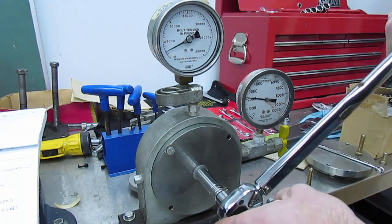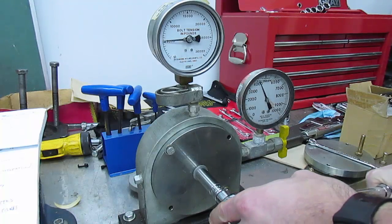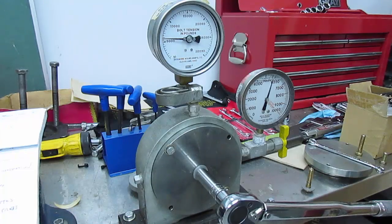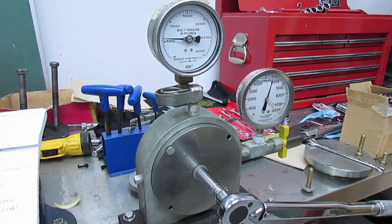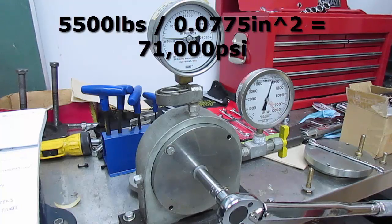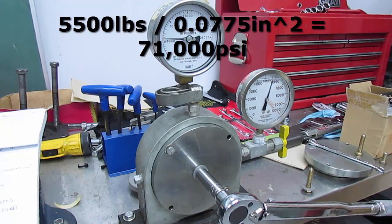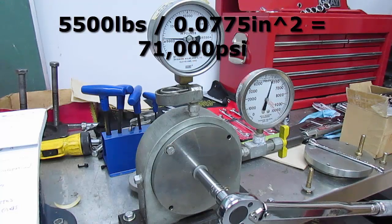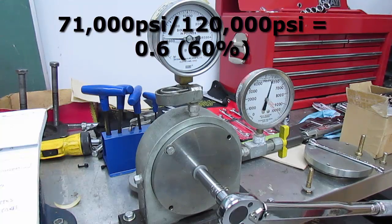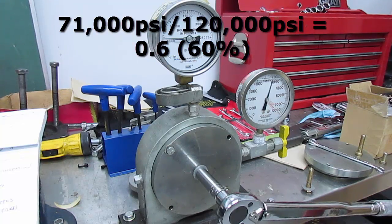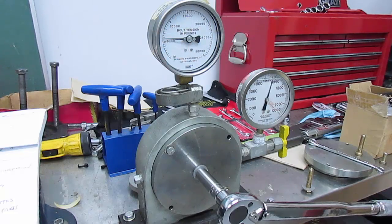As you can see, the bolt tension is increasing and there we go, we've reached 44 foot-pounds and the gauge reads approximately just over 5500 pounds of preload. So typing into our calculator really quickly here, we have 5500 pounds of preload, we're going to divide that by the tensile area of the bolt which is 0.0775 inches, and we get about 71,000 psi stress. And we can divide that by the minimum yield stress of this particular fastener which is 120,000 psi, and we reached about 60% of its minimum yield stress with 44 foot-pounds of torque.